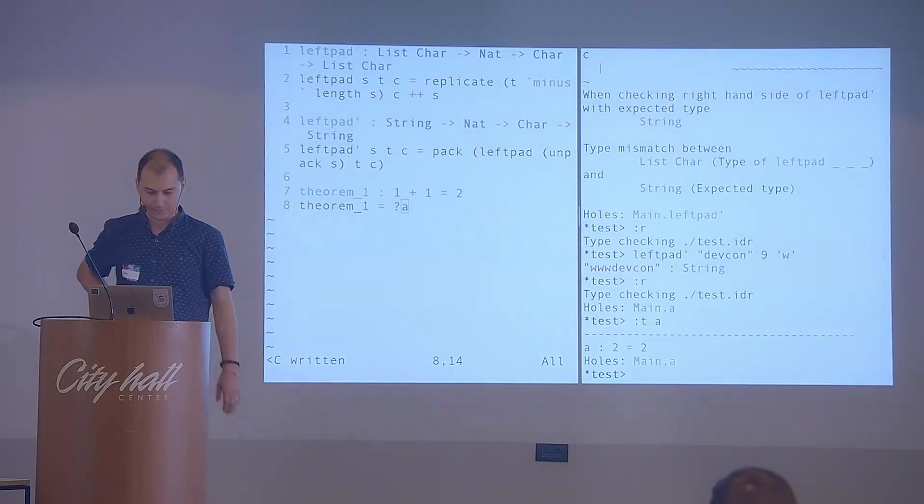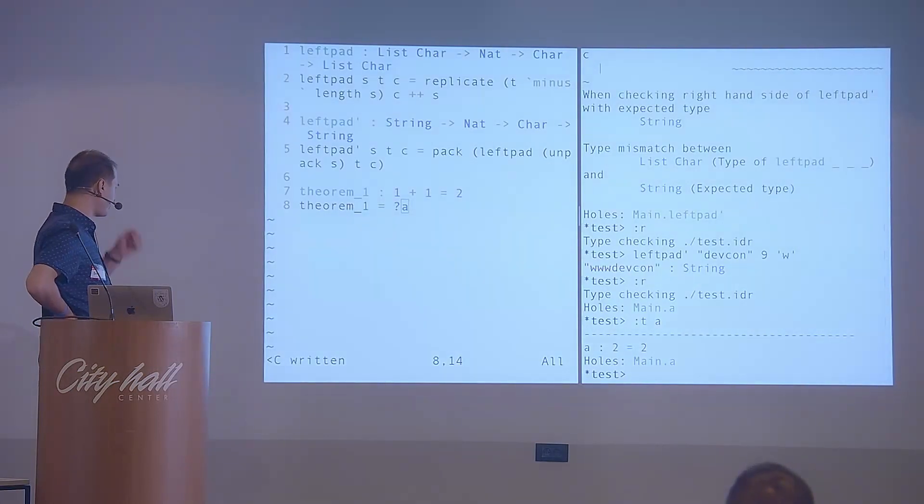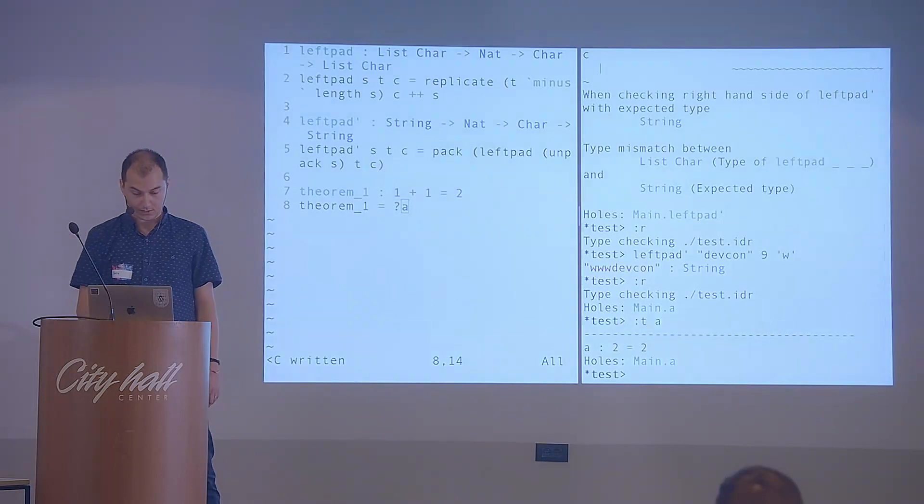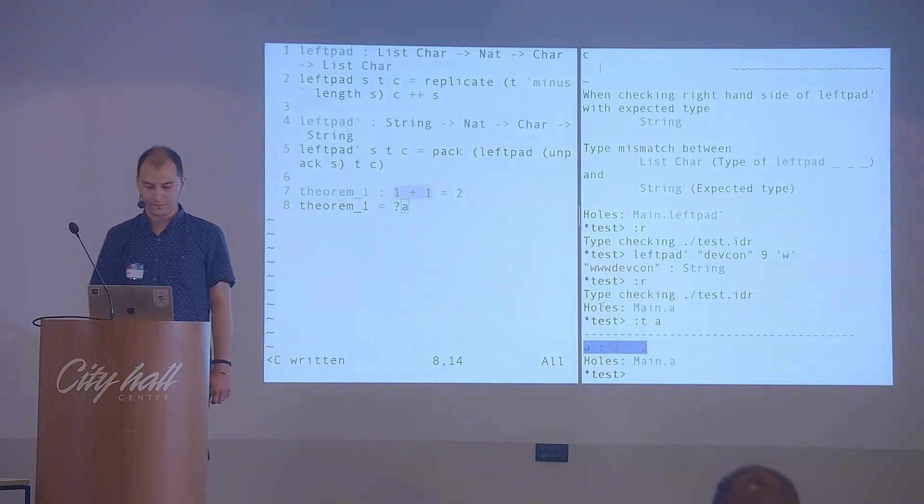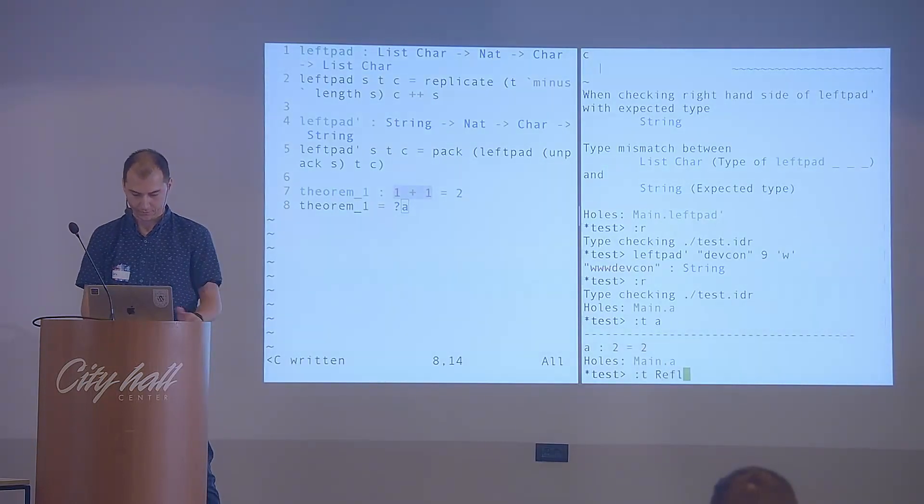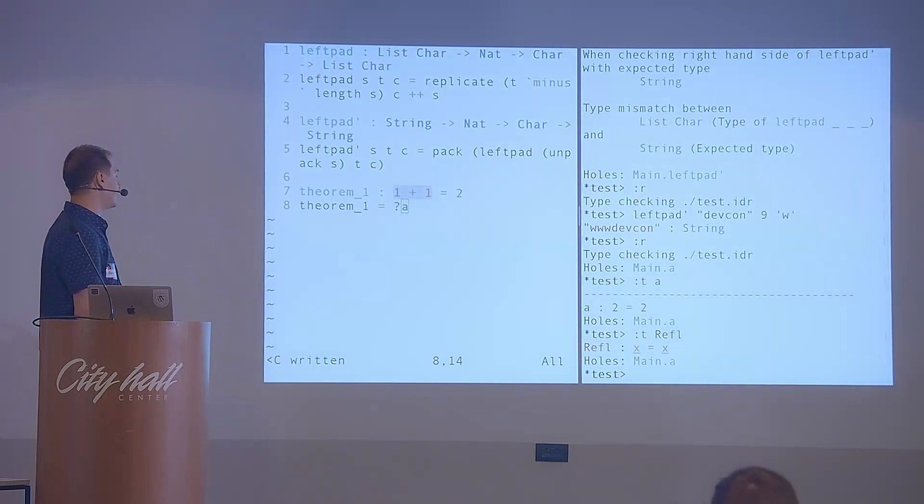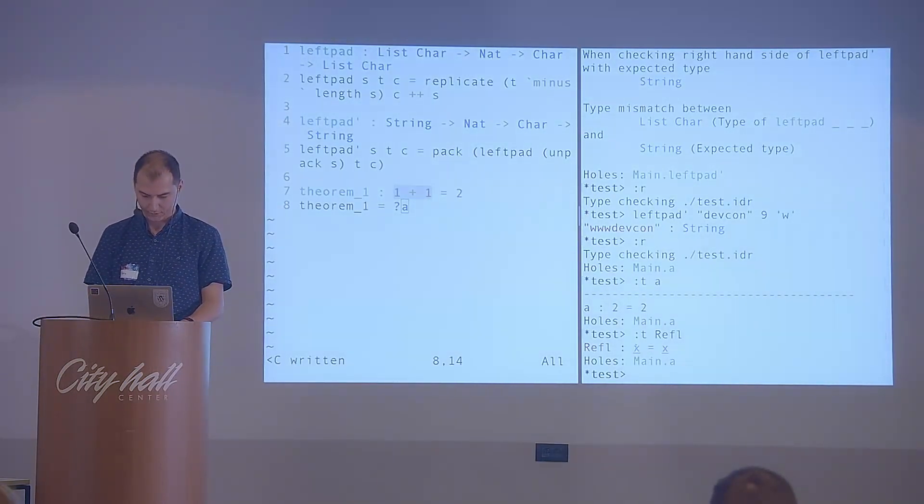With colon T, you can check the type of the hole. And we can observe a very interesting thing. And that's how computation already occurred at the type level. We had 1 plus 1 here. But, once Idris type checked it, it inferred that 1 plus 1 is already equal to 2. And the type of the theorem now becomes 2 equals 2. So, in order to prove this, there is a built-in constructor for this type. It's called REFL, which stands for reflexivity. And it really means that if you have an X on the left side of an equal sign, and you have an X, the same X on the right side, then you can use this constructor to fulfill the conditions needed for this type.